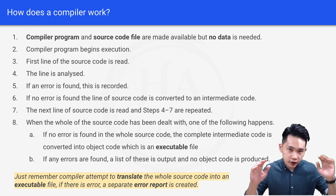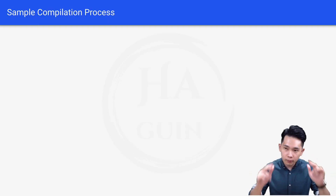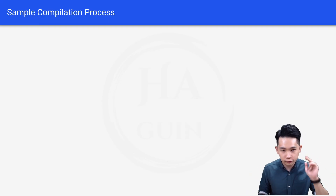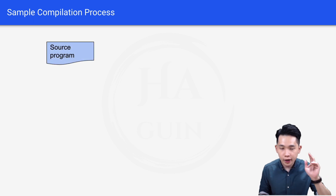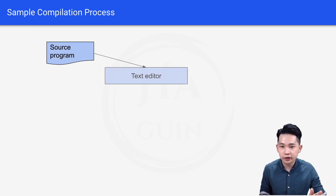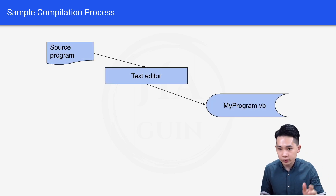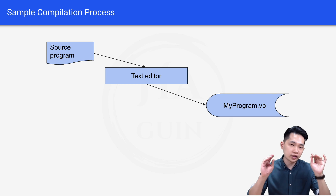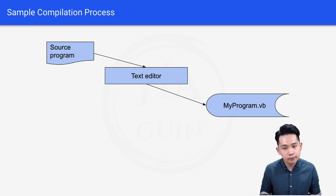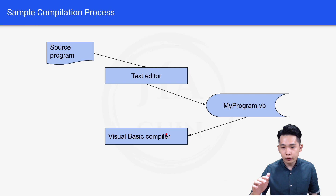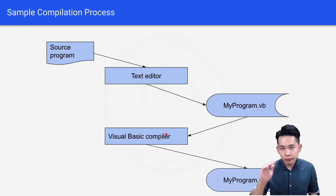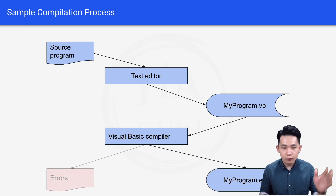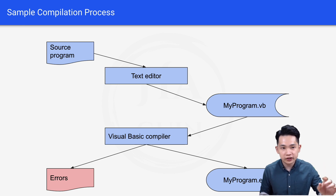Let's look at a sample compilation process. We start with the source program in a text editor, for example myprogram.vb, written in Visual Basic. It goes through the Visual Basic compiler: if there are no errors, it produces myprogram.exe. If there are errors, it produces an error report and we go back to fix the source program.